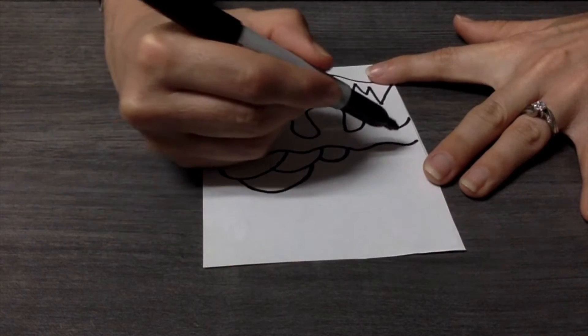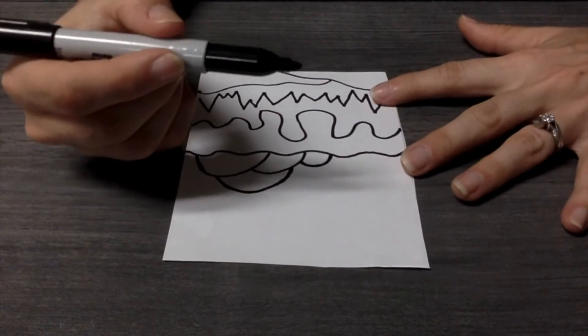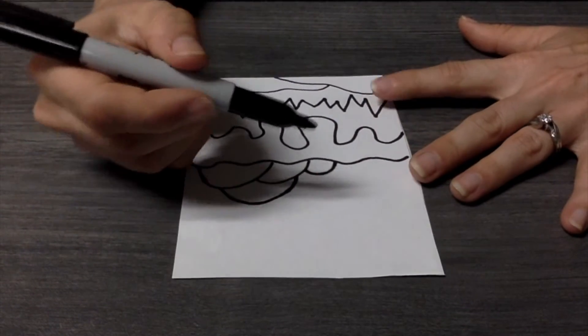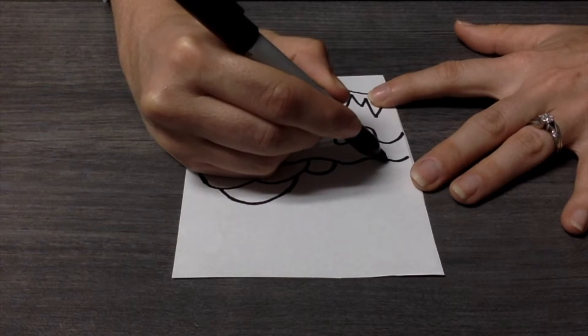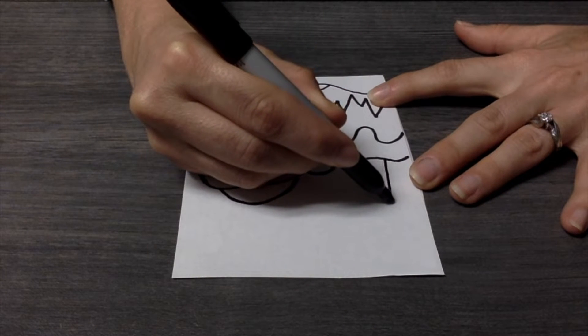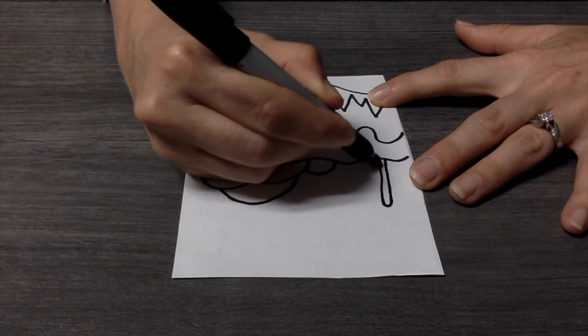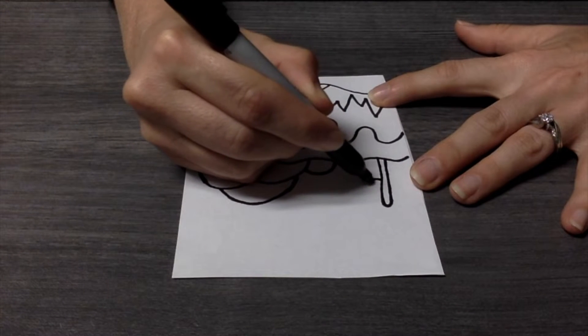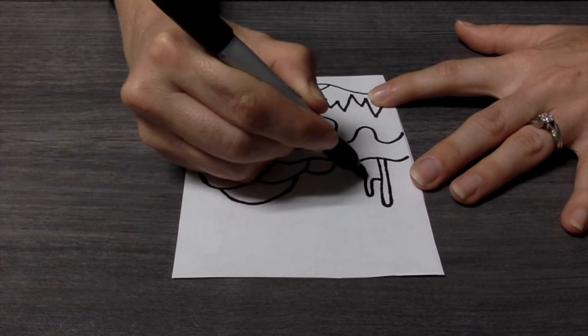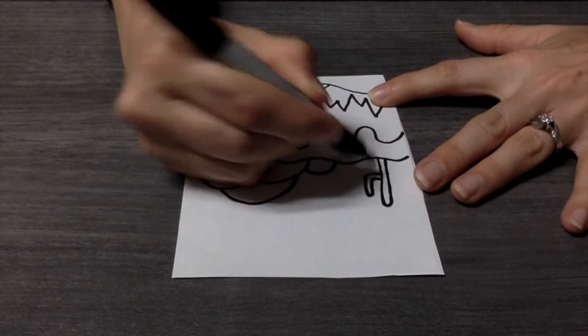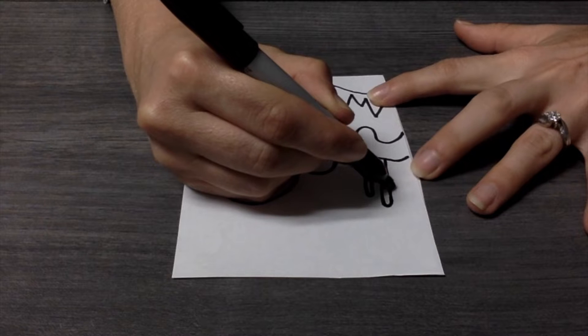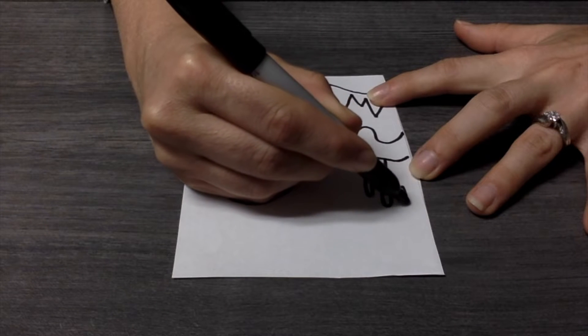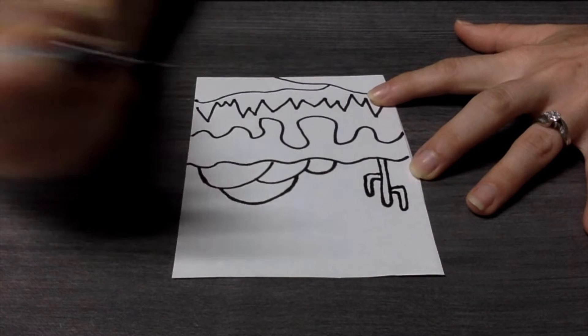And now we are going to add our cactus. This is what is really going to help it make it look like a desert. So we are going to go up the hill and down the hill. Out, up, down, over. Out, up, down, over. Out, up, down, over the other way.